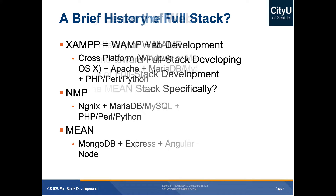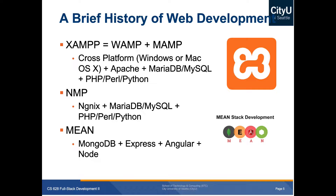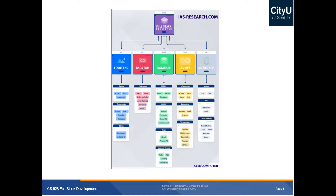Let's go through a brief history of web development. One of the older stacks is LAMP/WAMP/MAMP — basically a stack where you have Apache as your server and MariaDB or MySQL as your database, and you use PHP, Perl, or Python. The W or M denotes if it's Windows or Mac format. We also have NGINX-based stacks, and then the MEAN stack with MongoDB, Express, Angular, and Node.